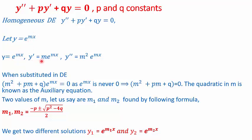The first derivative of y is m·e^(mx), and the second derivative y'' is m²·e^(mx). Each one of them has the term e^(mx) and it can be easily pulled out. When we substitute y, y', and y'' in the given differential equation and take e^(mx) common, we get the first term m² + pm + q and the second term e^(mx). Since e^(mx) can never be 0, m² + pm + q = 0. This is a quadratic equation, also called an auxiliary equation.